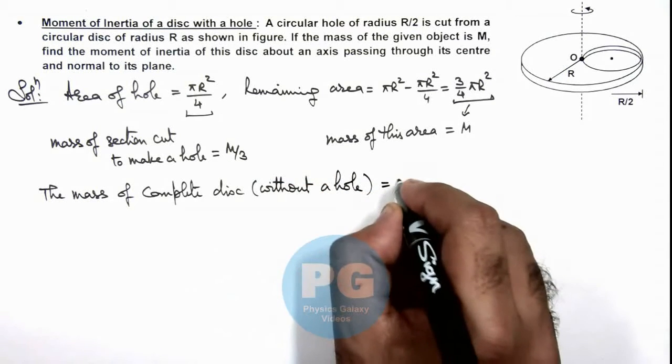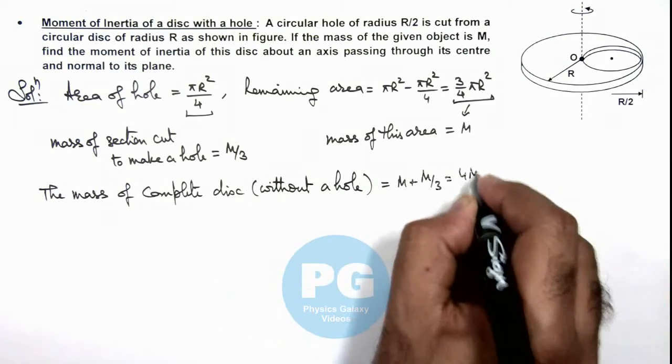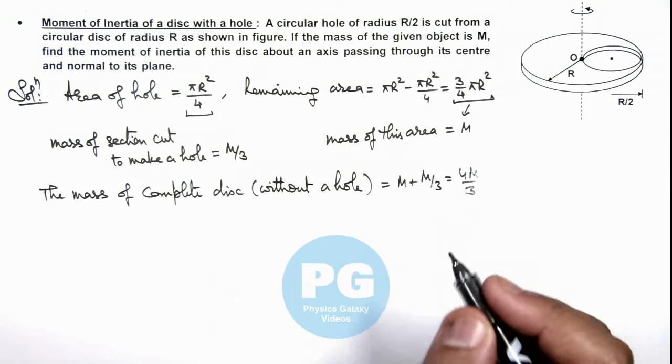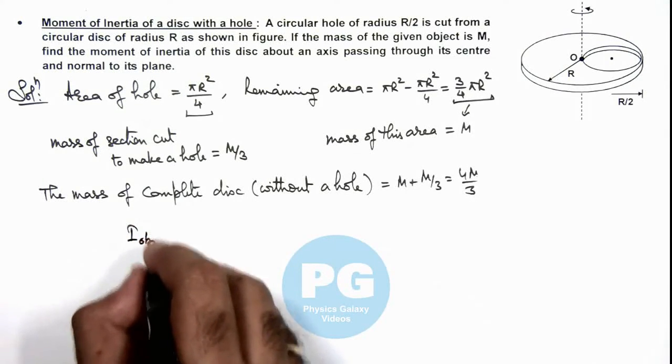M plus M/3, that is equal to 4M/3. Now, after this we can calculate the moment of inertia of the given object.